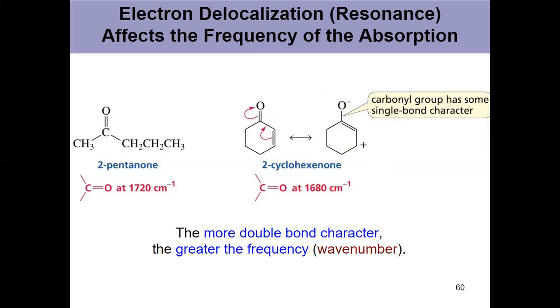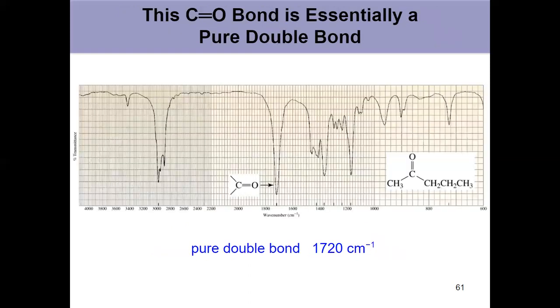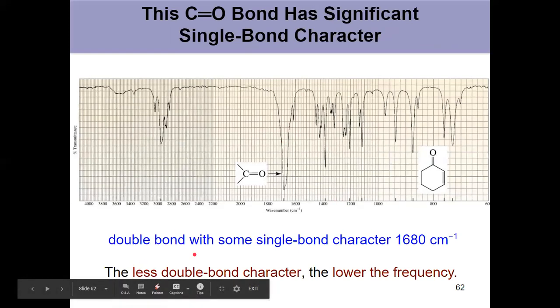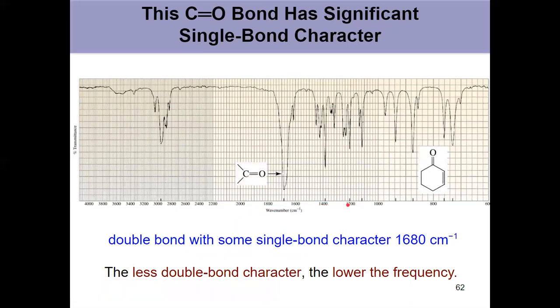If you have resonance in your pi bond, it shifts to a lower wave number, further to the right. A pure double bond appears at 1700 or slightly to the left, like 1720, always a nice strong peak. One with single bond character shifts slightly right, by about 40 wave numbers. Less double bond character, meaning more single bond character from delocalization, lowers the frequency and shifts it right.